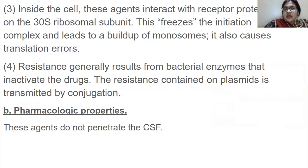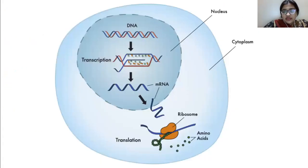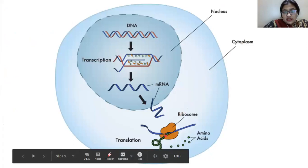Inside the cell, these agents interact with receptor proteins on the 30S ribosomal subunit. This freezes the initiation complex and leads to a buildup of monosomes. It also causes translation errors, meaning it freezes the protein synthesis process.